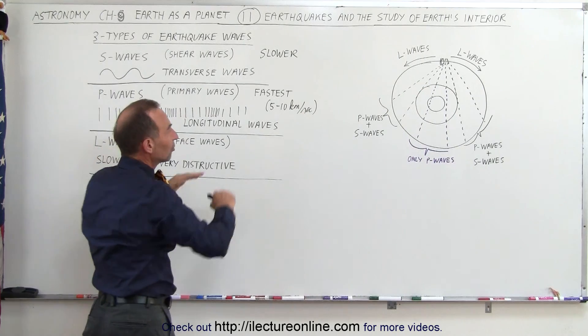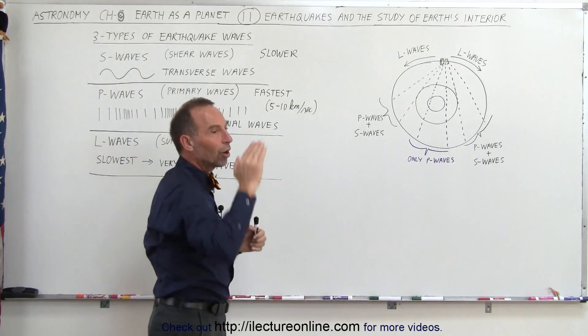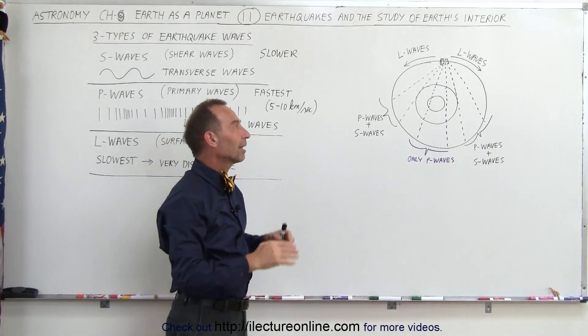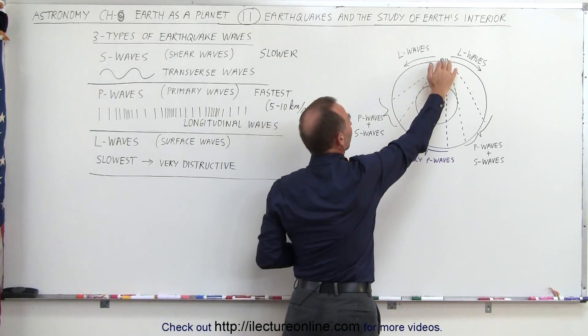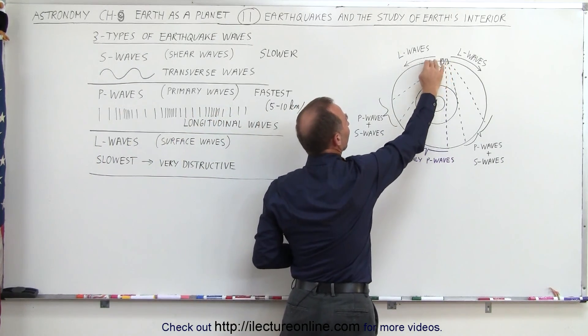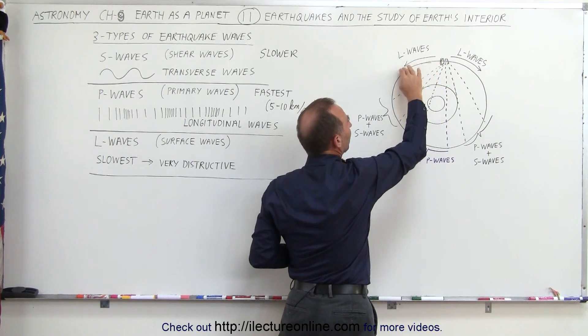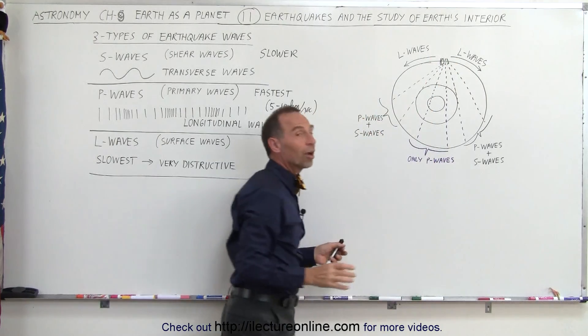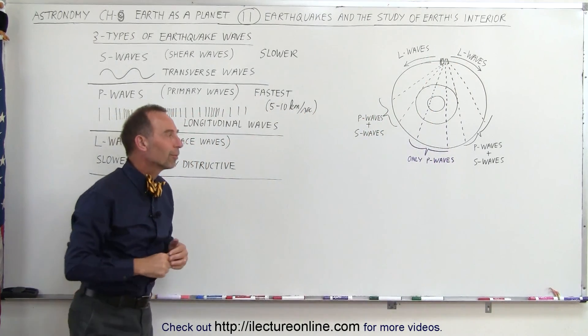And then we have the L waves which simply travel around the surface, which cause the Earth's surface to ripple, carrying the energy along the edge. And of course, that rippling effect will slowly dissipate and become less and less. The energy will slowly dissipate as the waves go farther and farther away from the source, so the most damage is of course caused very close to the source of the waves themselves.